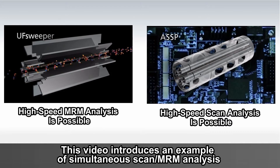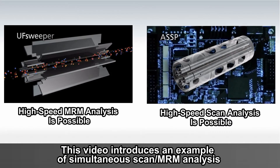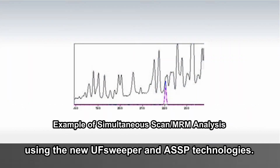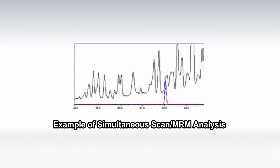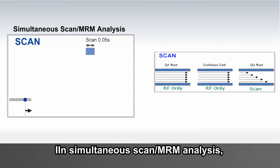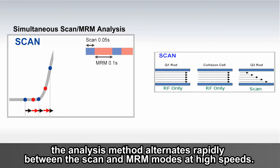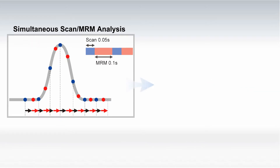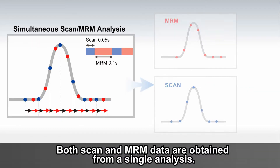This video introduces an example of simultaneous scan MRM analysis using the new UF Sweeper and ASSP technologies. In simultaneous scan MRM analysis, the analysis method alternates rapidly between the scan and MRM modes at high speeds. Both scan and MRM data are obtained from a single analysis.